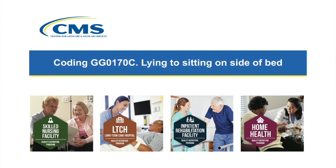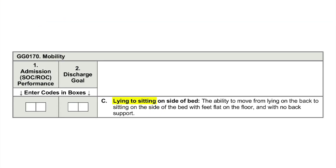In this provider training video we will demonstrate how to assess item GG0170C, lying to sitting on side of bed, using two different coding scenarios. Remember these items are coded to reflect a patient's or resident's usual performance during the assessment. Lying to sitting on side of bed is defined as the ability to move from lying on the back to sitting on the side of the bed with feet flat on the floor and with no back support.